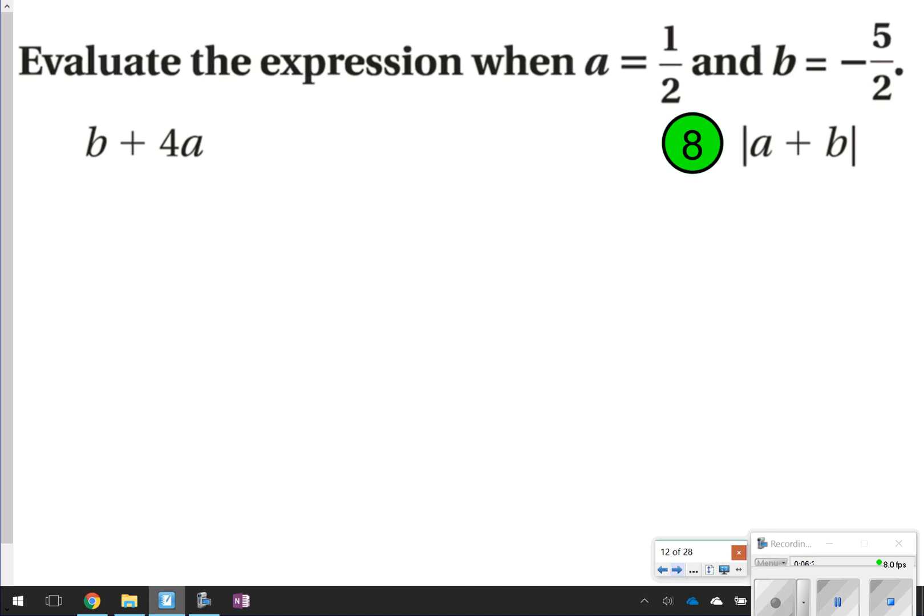The last one I'm just going to show you really quickly, evaluating the expressions. This is just basically when you're plugging in values and then solving. We're going to look at just number eight together. So you can write as we go or pause it and write when we're done. We have the absolute value of a plus b. So a I know is one half and b is negative five halves. So a plus b, that'd be one half plus negative five halves. I have different signs subtract. So I'm going to subtract five and one and I'm going to get four over two, still within absolute value, and it's still going to be negative because my larger value was negative.